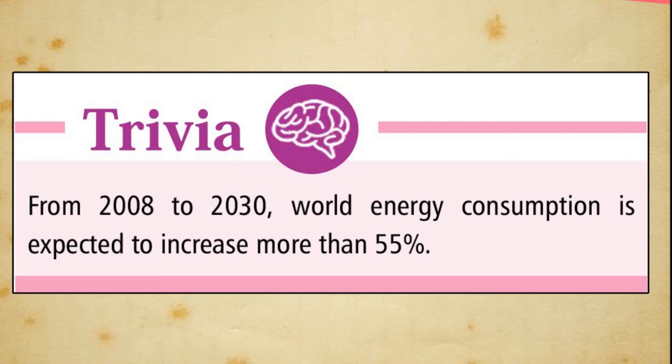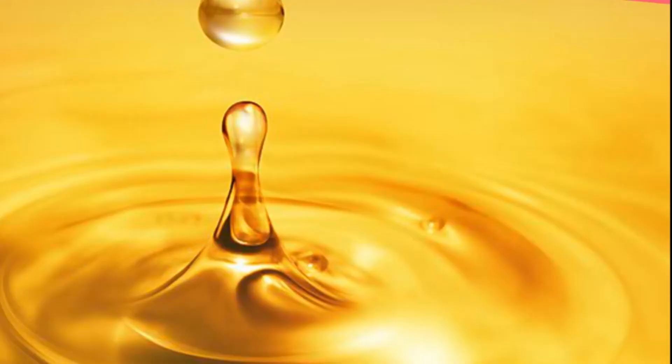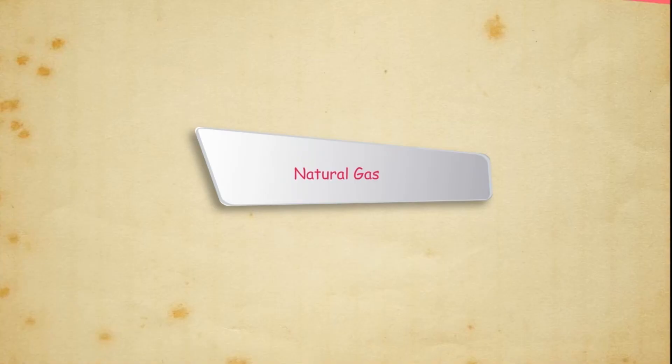Trivia: From 2008 to 2030, world energy consumption is expected to increase by more than 55%. Petroleum is obtained in crude form and is refined in oil refineries. Several oil products like gasoline, petrol, kerosene, diesel, etc. are made from it.